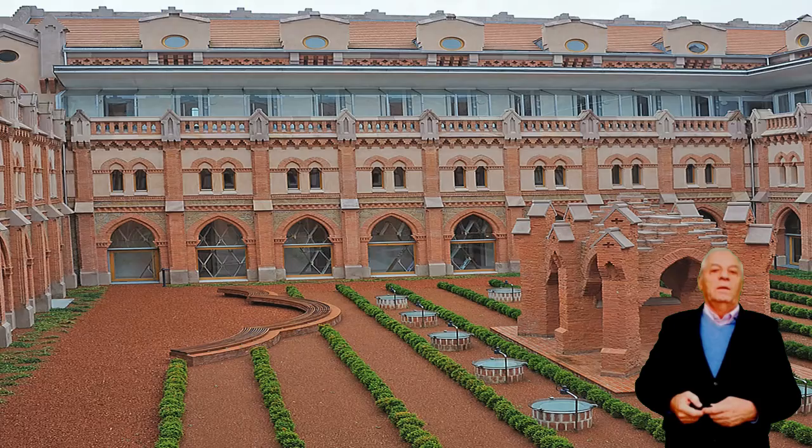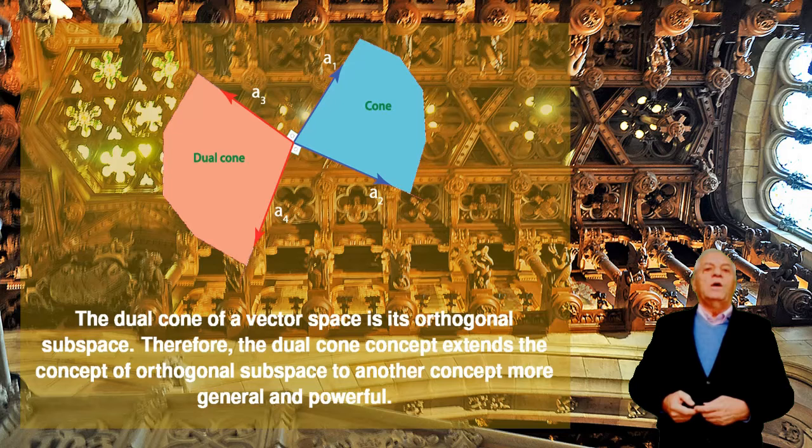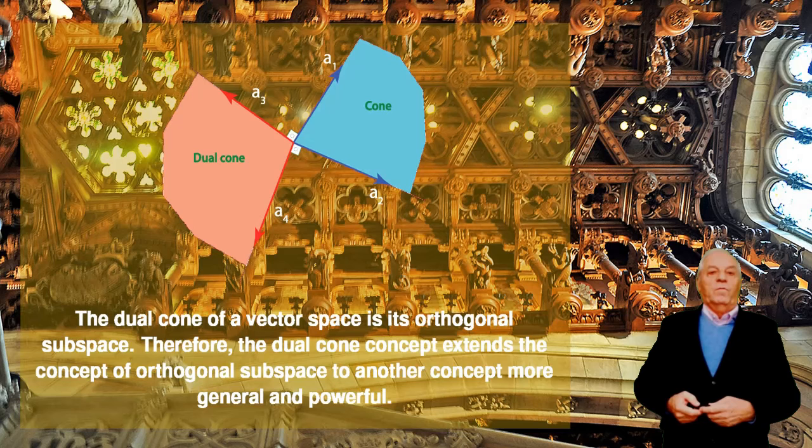To visualize the concept, we give one example. Suppose that you have the green cone in the central part of the figure, which is generated by vectors A1 and A2. Then the pink cone is its dual cone, which is generated by vectors A3 and A4. The vector A3 forms with vector A1 an angle of 90 degrees, and A4 forms with A2 an angle of 90 degrees, as represented in the figure.